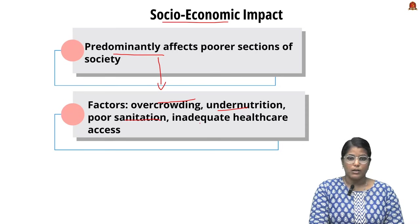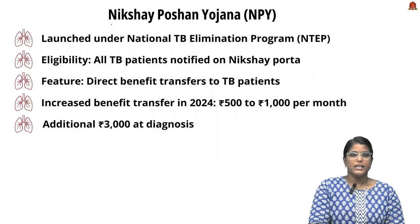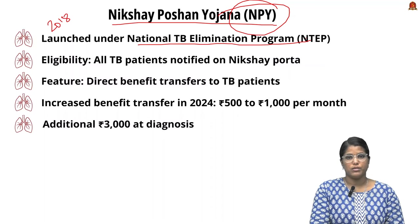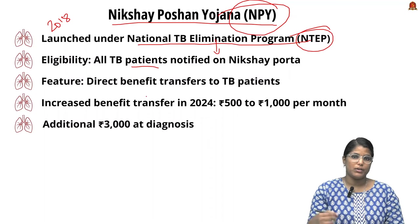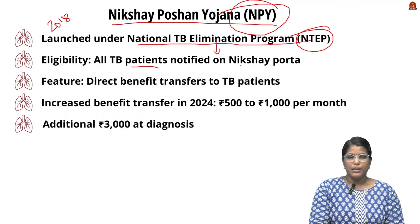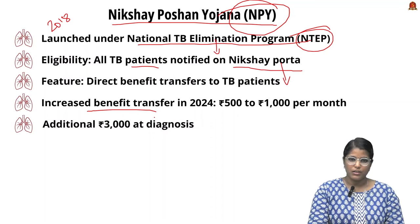The reasons include overcrowding, under-nutrition, poor sanitation, and inadequate healthcare access. To reduce all these impacts, the government came up with the Nikshay Poshan Yojana (NPY), launched in 2018 under the National Tuberculosis Elimination Program (NTEP). Under this program, all TB patients irrespective of socio-economic status will be added to the scheme and notified on the Nikshay portal, making them eligible for direct benefit transfer.